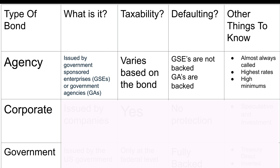Other things to know about agency bonds: they're almost always called before their actual expiration date. This is because they have the highest rates out of these three types of bonds, and so as interest rates come back down, they're going to get called. Another important thing to know is they have high minimums — a lot of them are $1,000, $5,000, or even $15,000 — so not the best if you're a beginning bond investor.